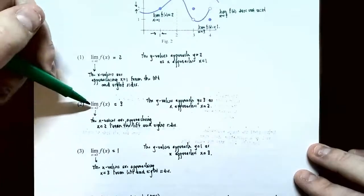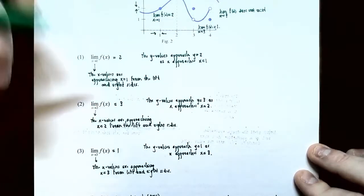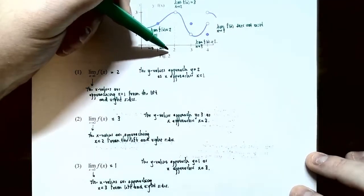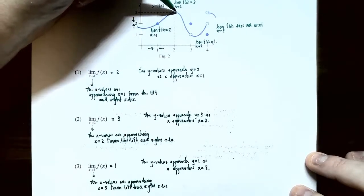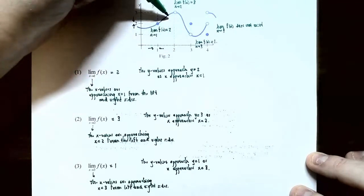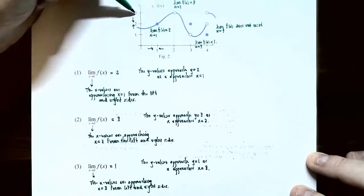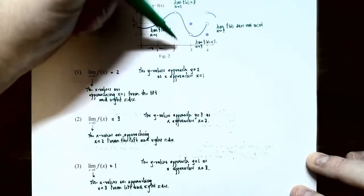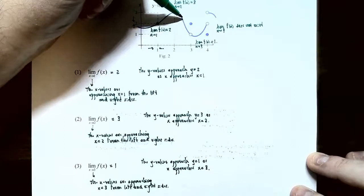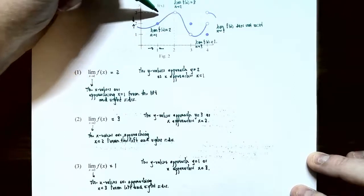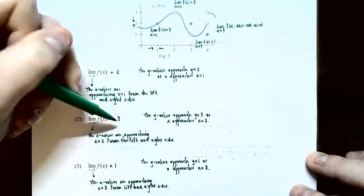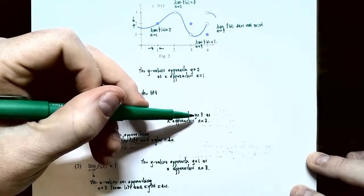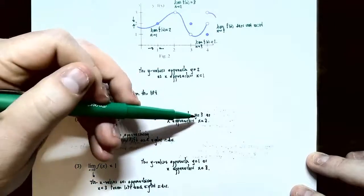Number two: find the limit as x approaches two. Approaching from the left side, the graph gets closer and closer to the hole in the graph at y equals three. Approaching from the right side, the graph also goes up to the hole where the y value is three. So the limit as x approaches two of f of x equals three. We're not interested in whether there's a point there — we're interested in what the y values are approaching.